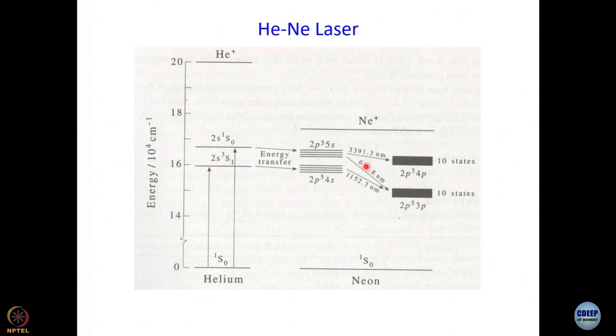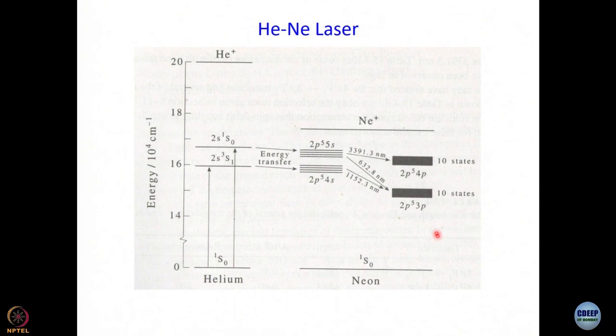Before going there it is easier for the lower levels to have non-radiative deactivation. The three emission lines correspond to: 2P⁵5S to 2P⁵4P gives 3391.3 nm, 2P⁵4S to 2P⁵3P gives 1152.3 nm, and 2P⁵5S to 2P⁵3P gives 632.8 nm. Also, for the lower levels this radiative transition is not all that favored — the transition moment integral does not have a very large value. So it is to be honest a serendipity that this helium-neon mixture has all these properties that allow us to make a laser out of them.